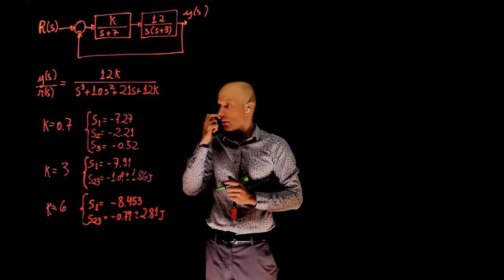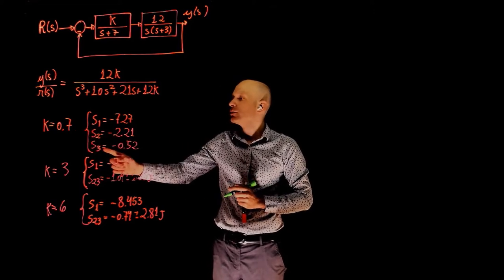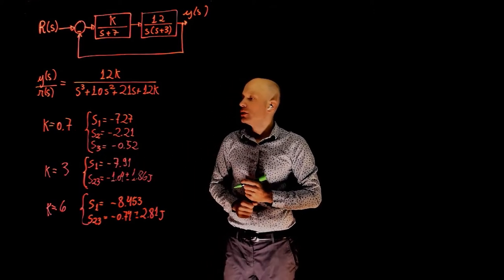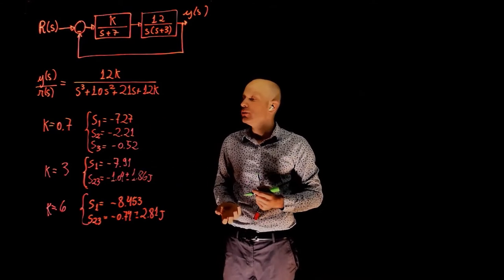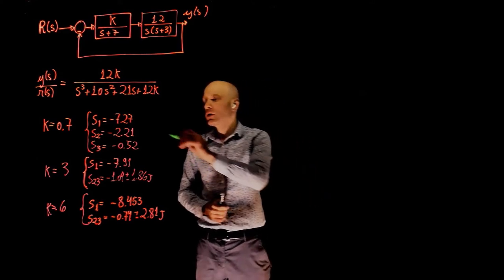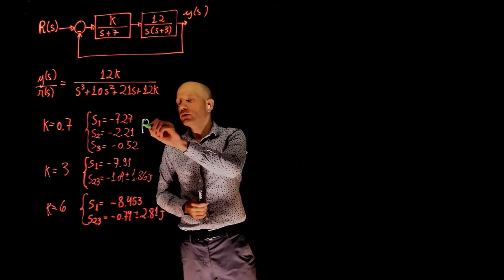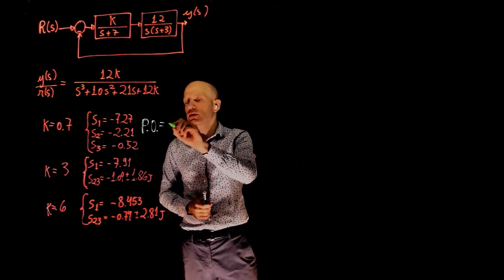When K equals 0.7, we see the poles here and they are all real numbers. This means that the time response to step input will be an exponential function. This also means that the percent overshoot for this specific control gain is 0.